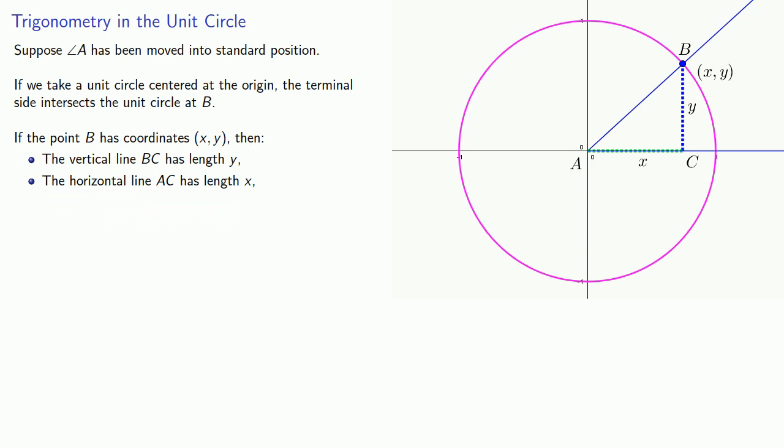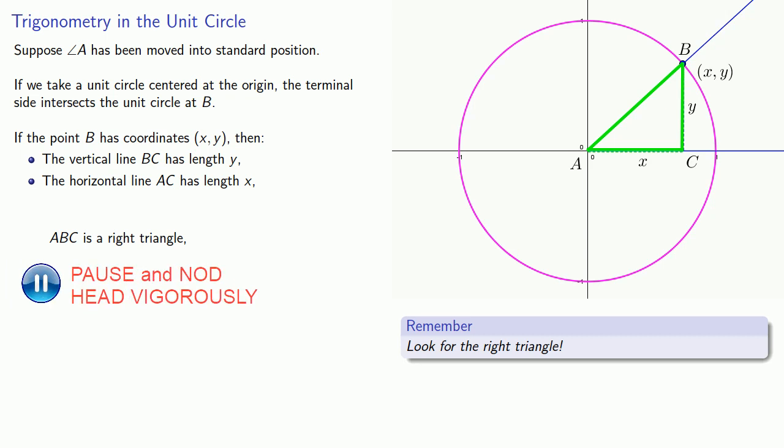And a useful rule in mathematics is look for the right triangle. Since BC is vertical, that means that this angle BCA is a right angle, and so ABC is a right triangle. Now we know AC is x and BC is y, but what about this third side AB? Well remember, that's the distance between the center of the circle and a point on the circle. And since this is a unit circle, the radius AB has length 1.